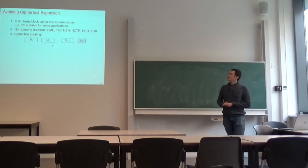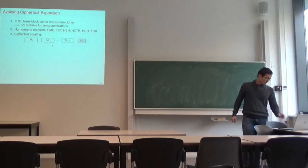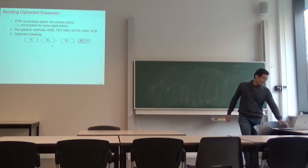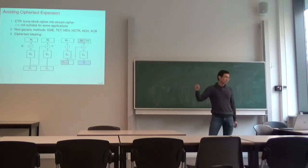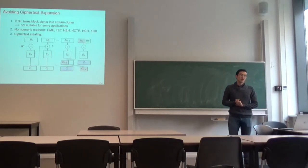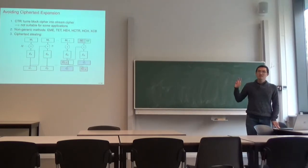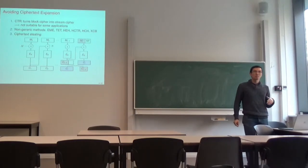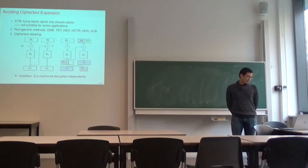The last method is ciphertext stealing. We first pad the plaintext into a multiple of n, then apply CBC mode, then truncate ciphertext block C_{L-1} and swap it with the last ciphertext block. Ciphertext stealing cannot be used separately — it can only be used in combination with other modes of operation, which leads to a limitation: each ciphertext block C_i needs to be distributed independently of each other.